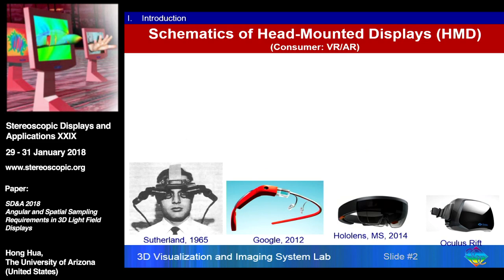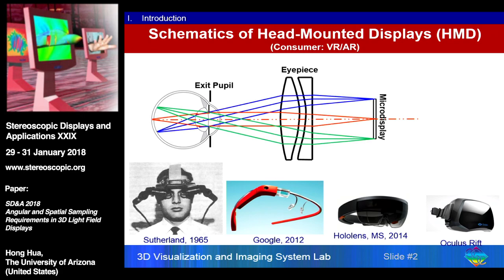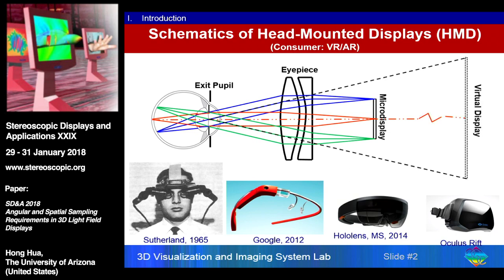Head-worn displays have become increasingly interesting and important in the field of AR and VR, and there are lots of HMDs that have been developed, some commercially available today. But all of them commercially available are based on the same simple schematics where you have a micro display and then you have a lens layer — an eyepiece. The eyepiece magnifies the image on the micro display so that your eye can see. Because the eyepiece typically does not have the ability to change the optical power, the image formed by the eyepiece to the eye appears to be a virtual display located at a fixed distance.